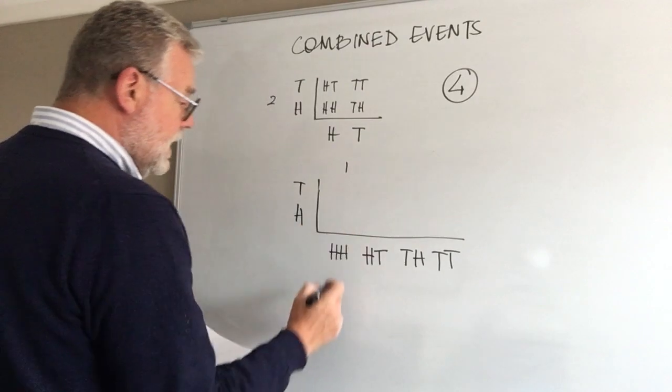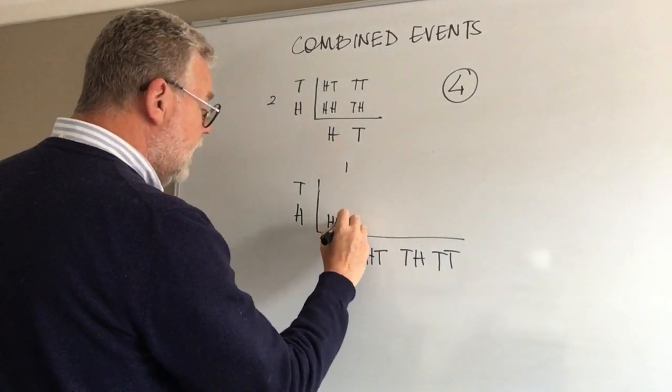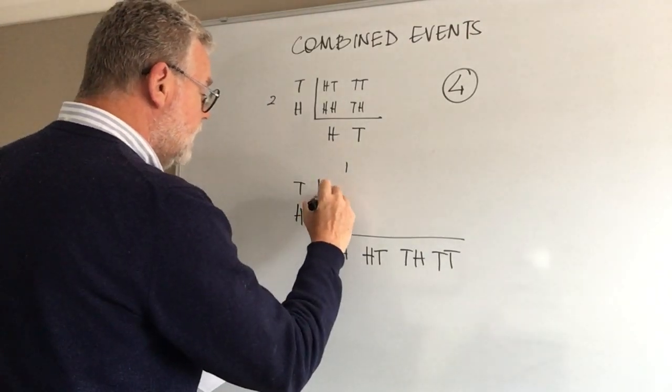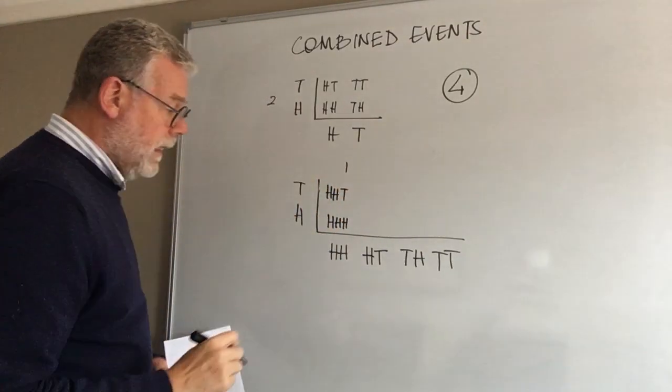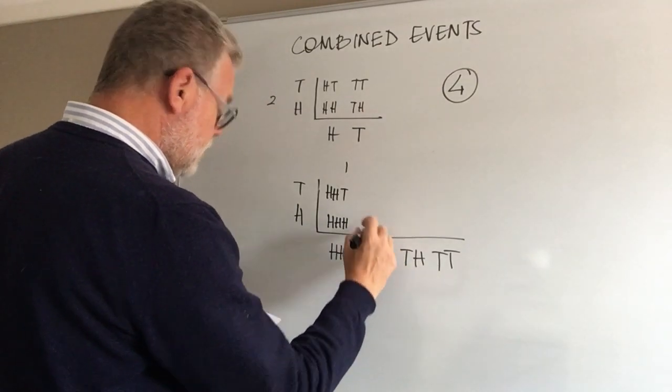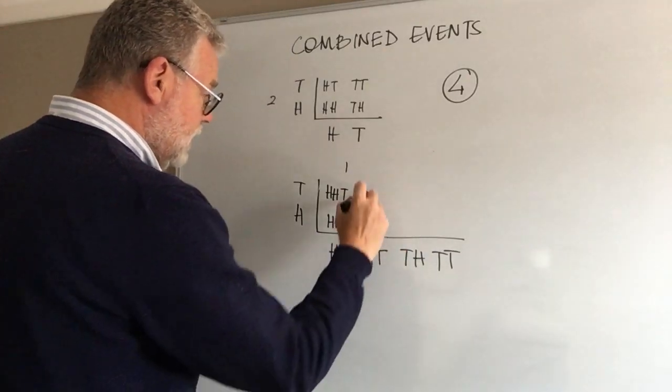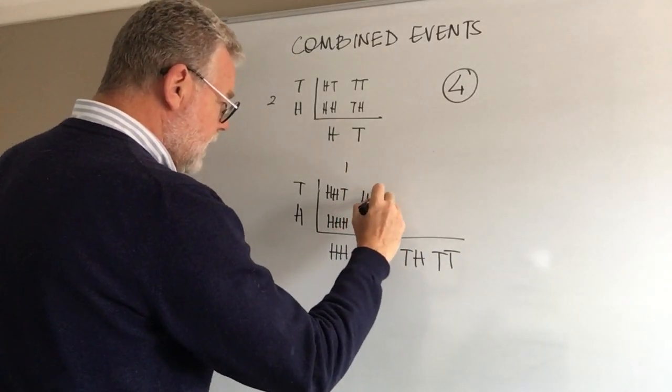So really, it tells us that I could have head, head, and head; I could have head, head, and tail. You can see how this fits together nicely. I could have head, tail, head or head, tail, tail.